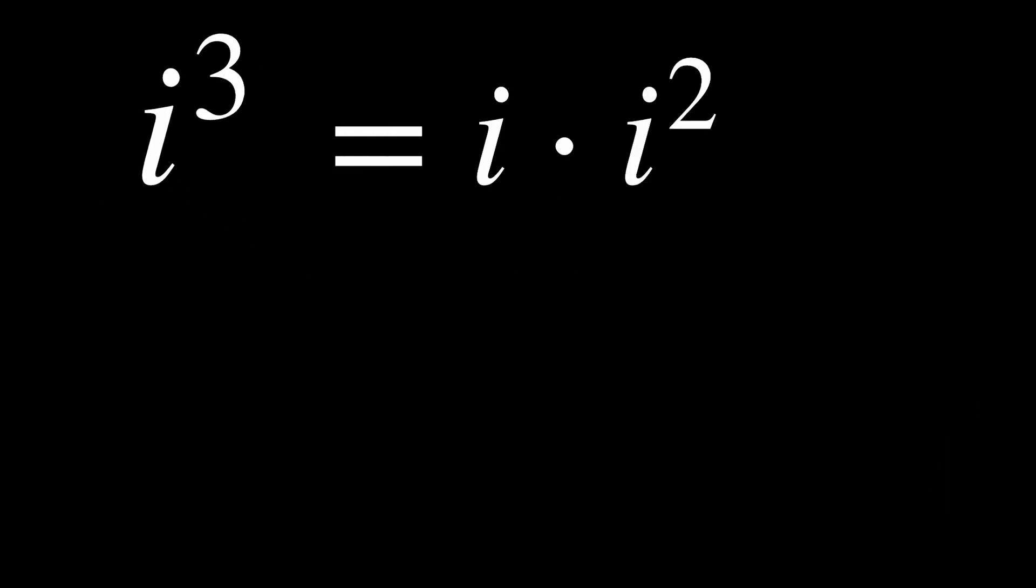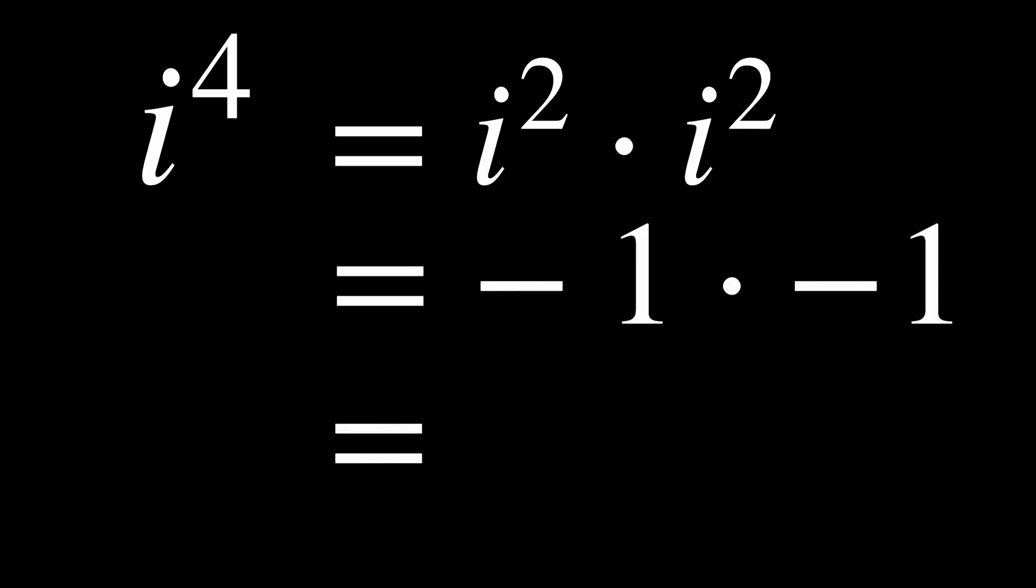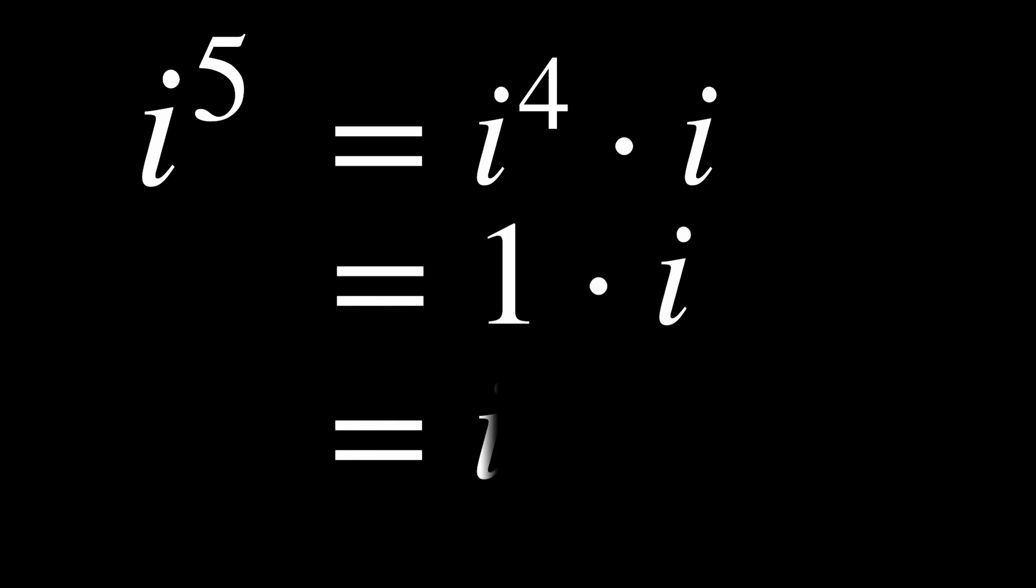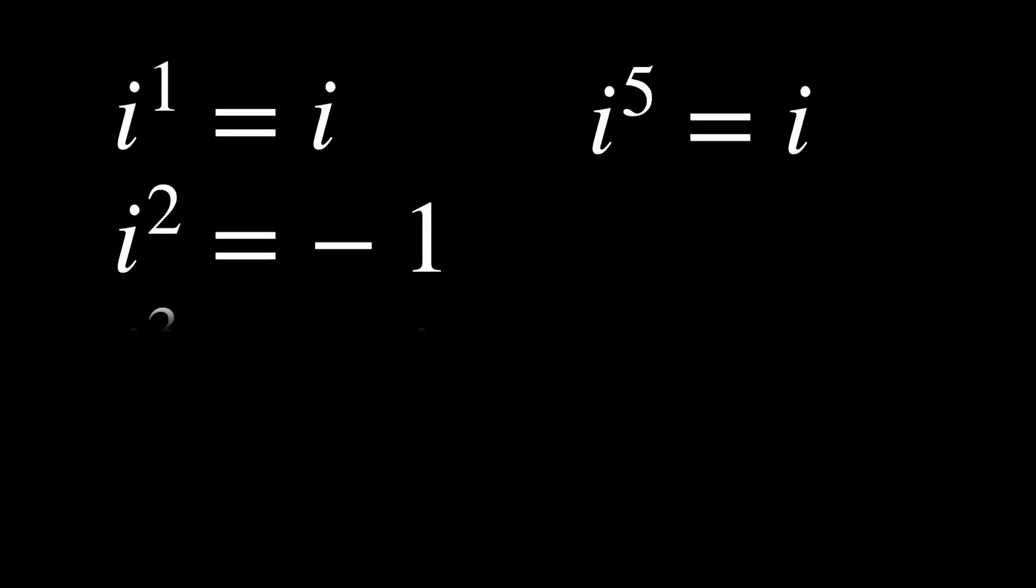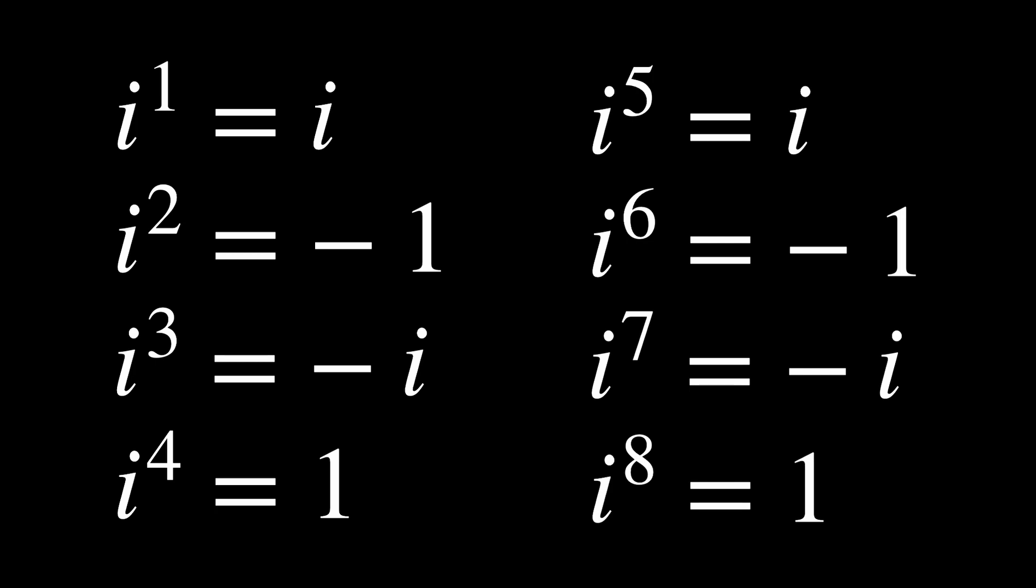By definition, we know that i squared is equal to negative 1. But what is i to the 3rd power? i to the 3rd power is just i squared times i, which is negative 1 times i, which is just negative i. We can do a similar thing to find i to the 4th. i to the 4th is i squared times i squared, which would be negative 1 times negative 1, which is just 1. Then we see that i to the 5th power is just i. Since this is the same as i to the 1st power, we can see that our pattern is going to repeat after every 4 times.